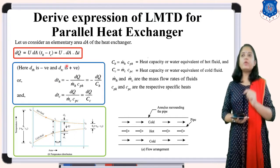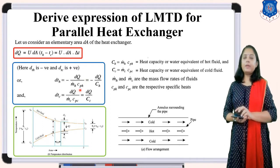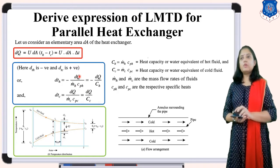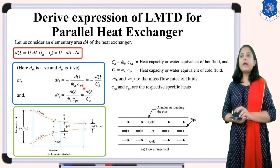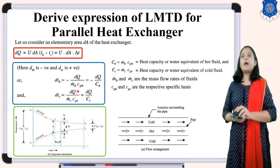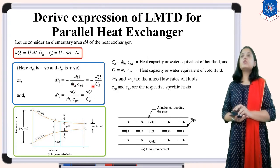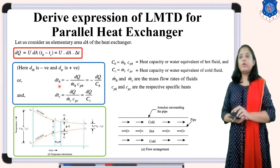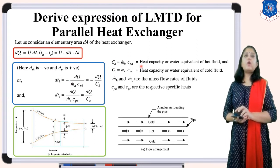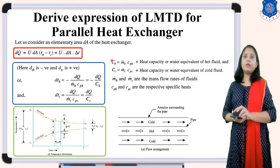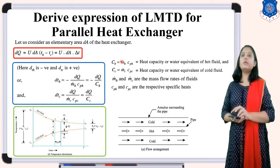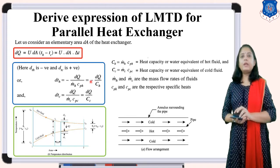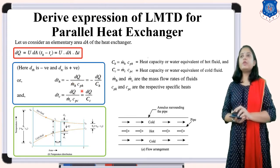For hot fluid: DQ = M·CP·DTH, so DTH = -DQ / (M-dot_H · CPH). Here M-dot_H is mass flow rate of hot fluid, CPH is specific heat of hot fluid. We define capital CH = M-dot_H · CPH as the heat capacity of the hot fluid. Therefore DTH = -DQ / CH.